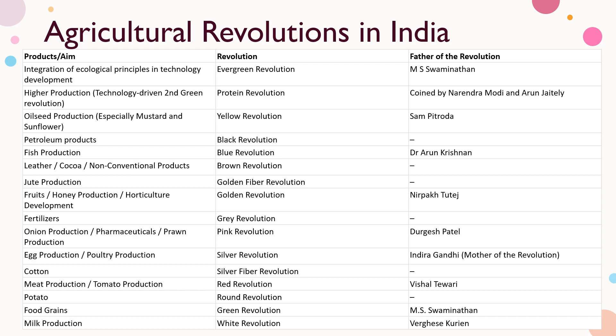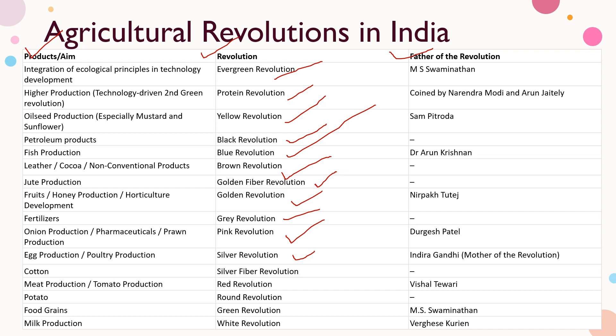This next slide is very important. We are going to list all the important revolutions, the father of each revolution, and the aim or product of that revolution. The 16 revolutions are: Evergreen Revolution, Protein Revolution, Yellow Revolution, Black Revolution, Blue Revolution, Brown Revolution, Golden Fiber Revolution, Golden Revolution, Gray Revolution, Pink Revolution, Silver Revolution, Silver Fiber Revolution, Red Revolution, Round Revolution, Green Revolution, and White Revolution.